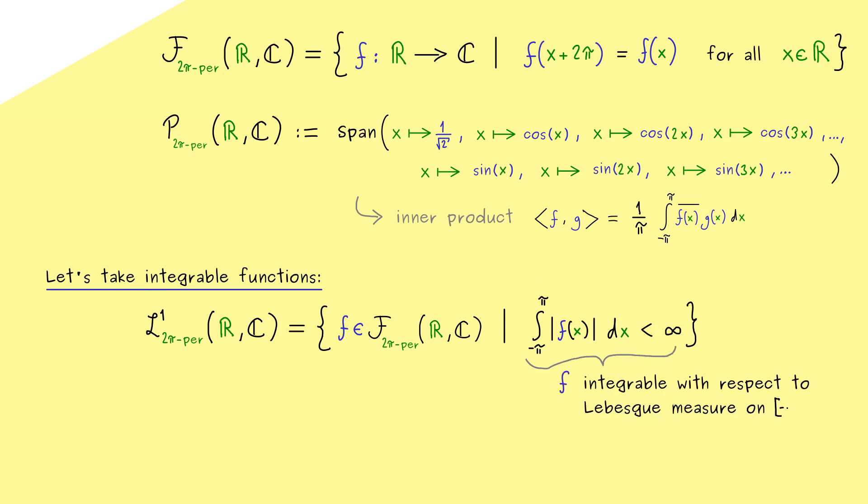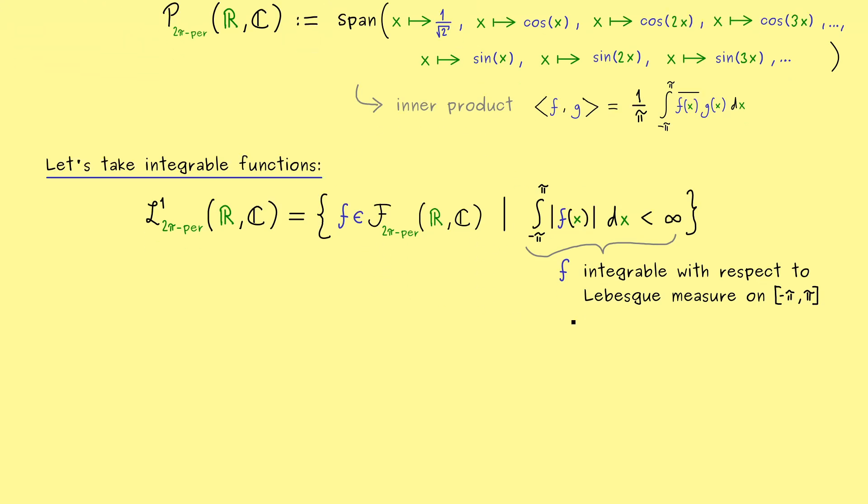More concretely, the Lebesgue measure on the interval minus π to π. Now, if you know some measure theory, this is not a problem for you and you also know that we have to fix a sigma algebra here. However, I don't want to go into the details here, because I have a whole measure theory course about that. And as I have already told you, here it's totally okay to think of the Riemann integral and just accept that we can extend the whole thing to a nice space. But if you are interested in more details, you can definitely check out my measure theory series. The result we get and need here is that this L¹ is a nice vector space as before.